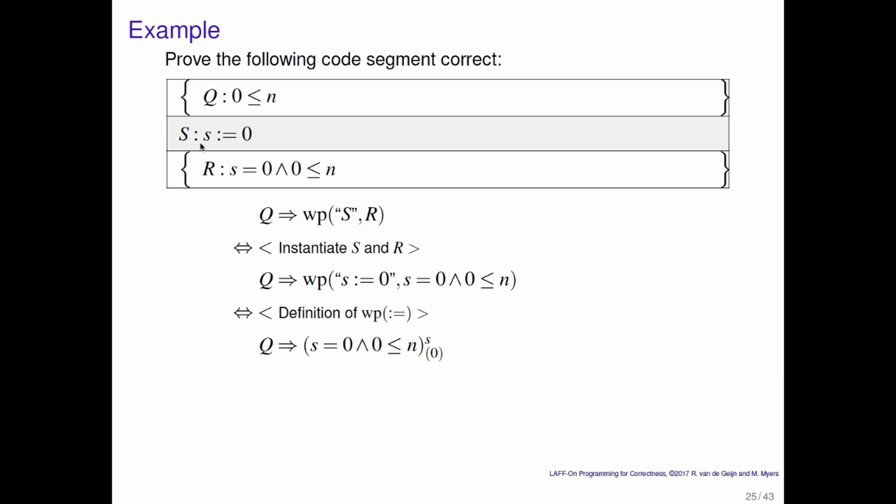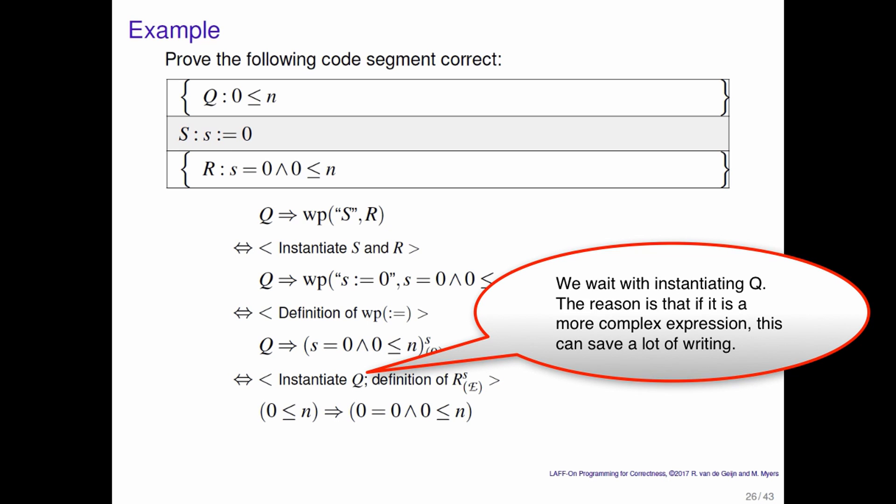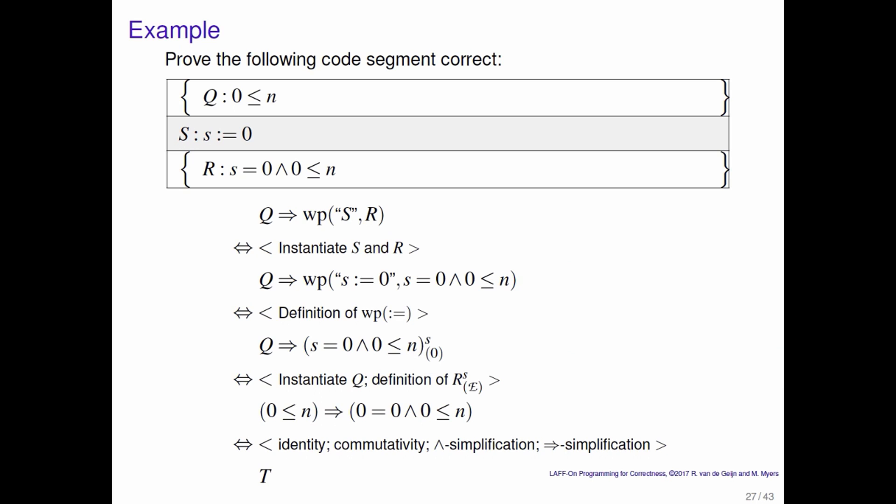We now know how to evaluate that. We know that we need to take the postcondition s equals 0 and 0 less than or equal to n and replace every occurrence of variable s with the expression 0. When we do that, we get what's on the right here of the implication. s has been replaced by 0. And at this point, we also go and instantiate q. And then we notice that through identity, commutativity, AND simplification, and implication simplification, this is true.